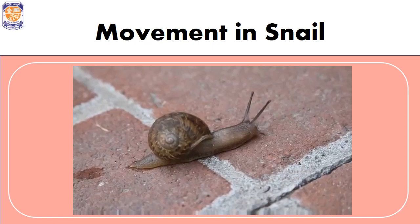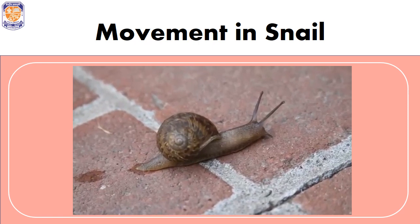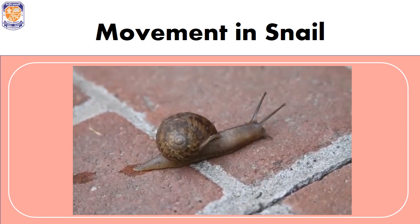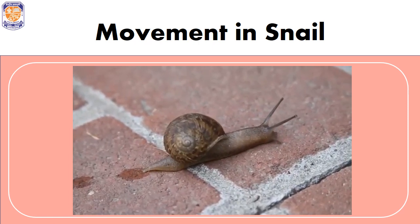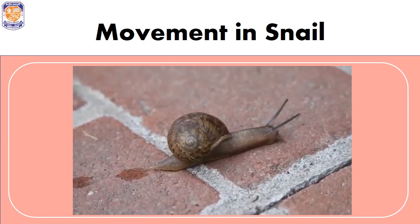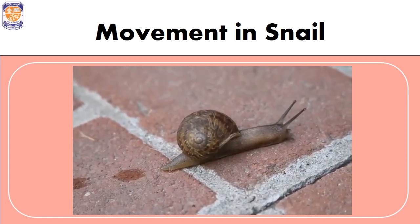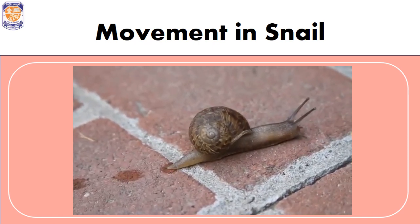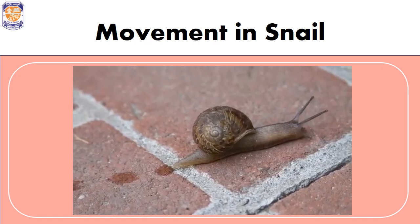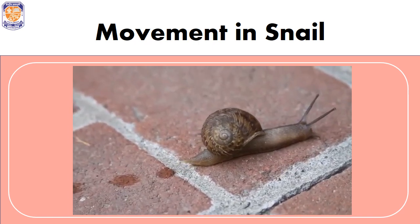The body of a snail consists of a head, a pair of tentacles, and a long muscular foot. The tentacles have eyes upon them. You can see the snail moving on its thick foot, which is made up of strong muscles. As it moves, you can see a mucus trail left behind, which makes movement easy and prevents injury.